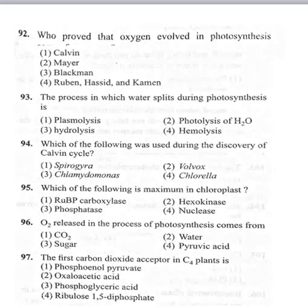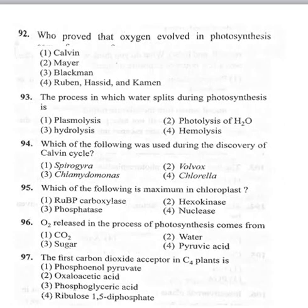96th bit: oxygen released in the process of photosynthesis comes from — option 1 carbon dioxide, option 2 water, option 3 sugar, option 4 pyruvic acid. Oxygen released in photosynthesis comes from water, not from carbon dioxide. This was proved by different scientists and explained by Cornelius Van Niel. Correct option is second: water.